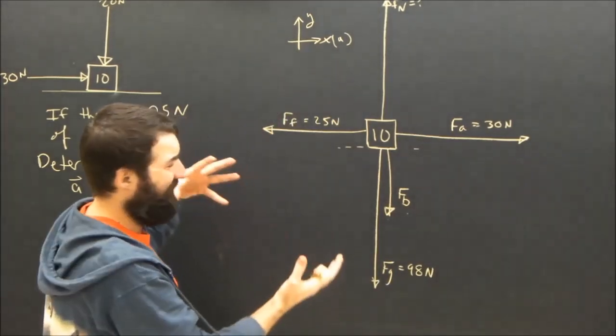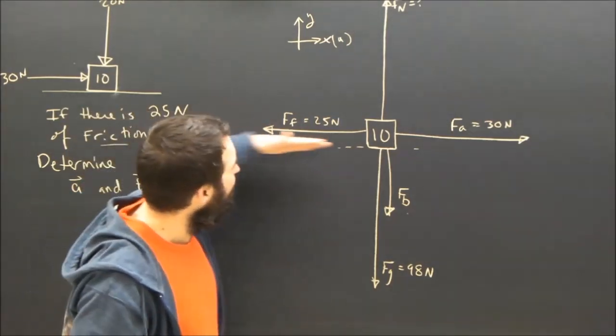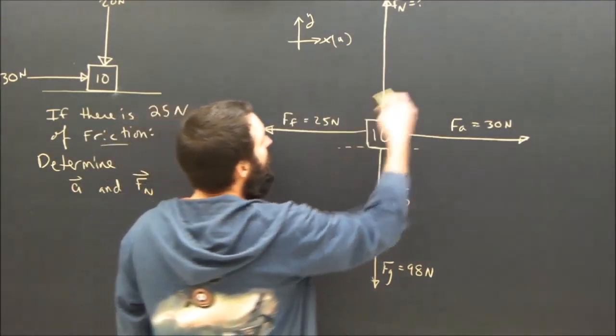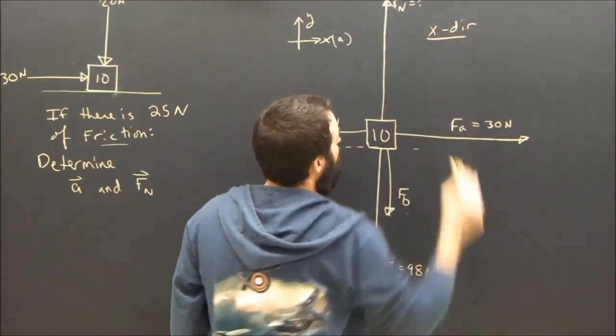I'm assuming that it's not going to sink into the floor. It's going to slide across the floor. So what is the x-direction equation going to say?